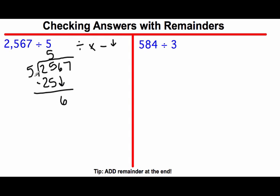How many times does 5 go into 6? 1 time. Now we multiply. 1 times 5 is 5. Subtract and bring down the last number.